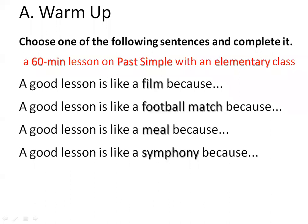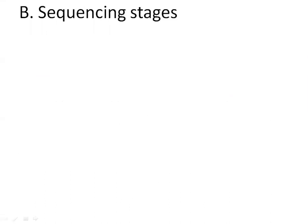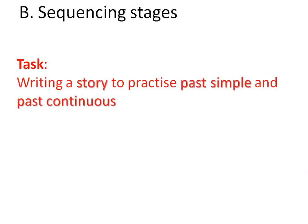Let's get going to the first thing: sequencing the stages of your lesson. We have a task — we're going to write a story to practice past simple and past continuous. This is what you're supposed to be doing with your students in the following lesson. Remember the task; you can take a screenshot if you like.